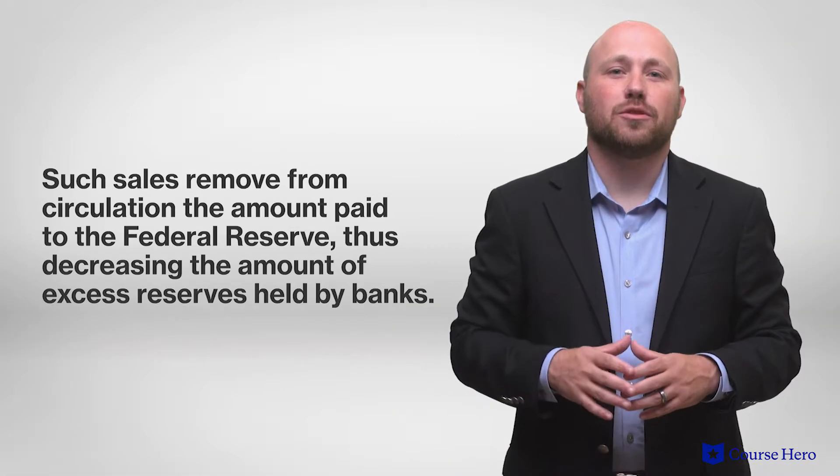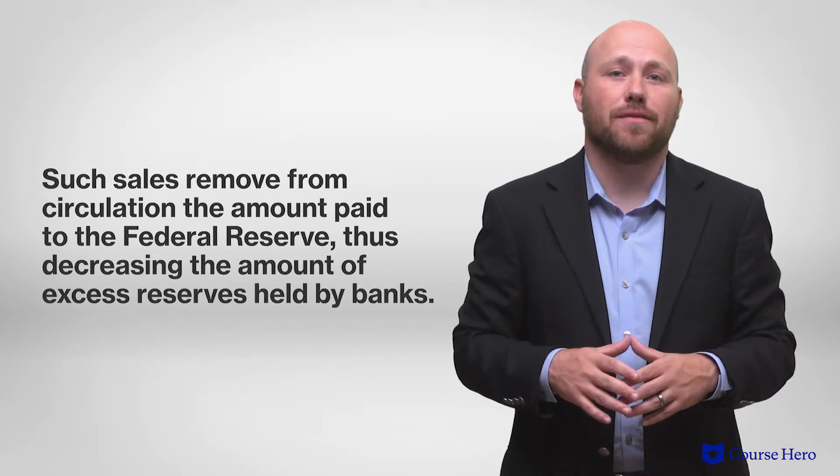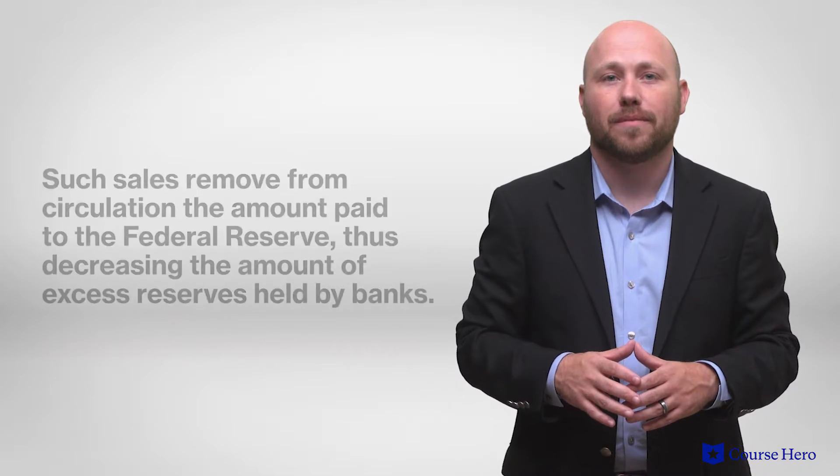The Fed may reduce the money supply by selling government securities to dealers. Such sales remove from circulation the amount paid to the Fed, thus decreasing the amount of excess reserves held by the banks and contracting the size of the money supply.